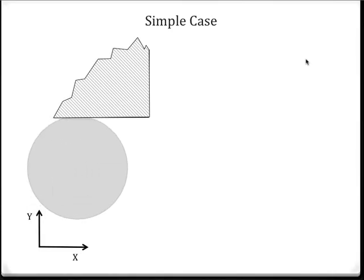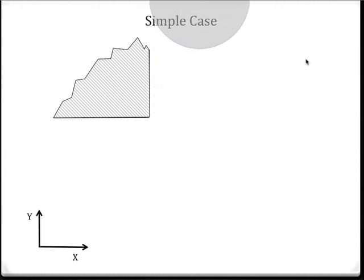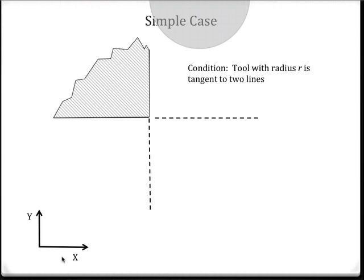Here's a simple case of a tool that's moving along two surfaces of the workpiece that are perpendicular to each other and oriented with respect to the y and x axes. If we were to use G41 or G42, we could create those surfaces. But the question is, what is the actual path that the tool follows? If we look at the tool, we note that it will have to be tangent to those two surfaces or, as you can see here, the extension of those two surfaces in order not to cut that corner.